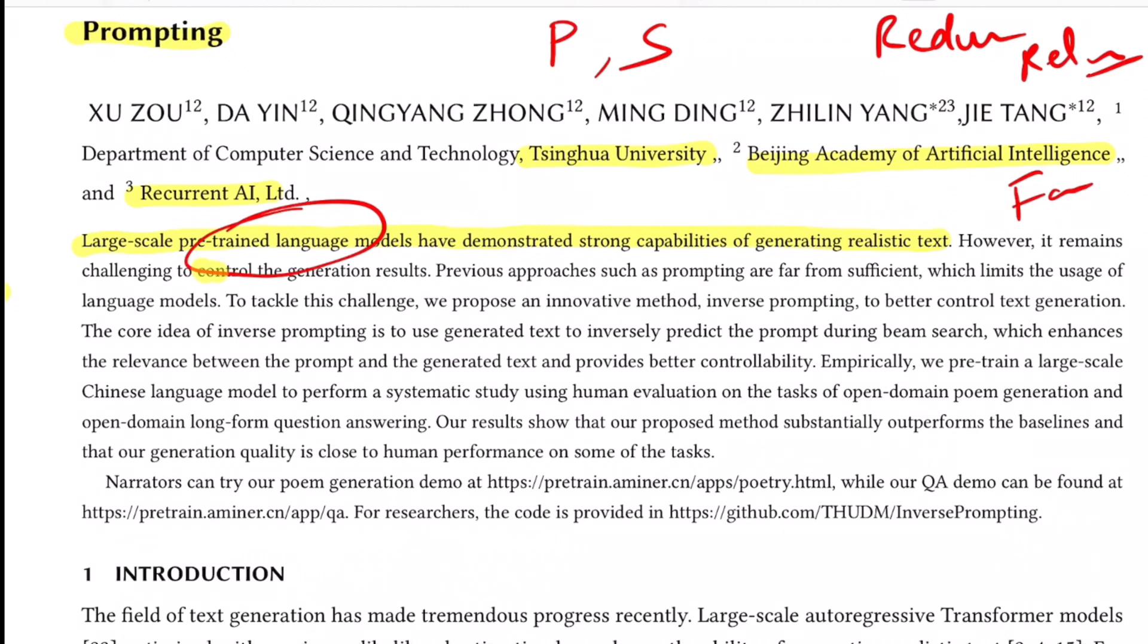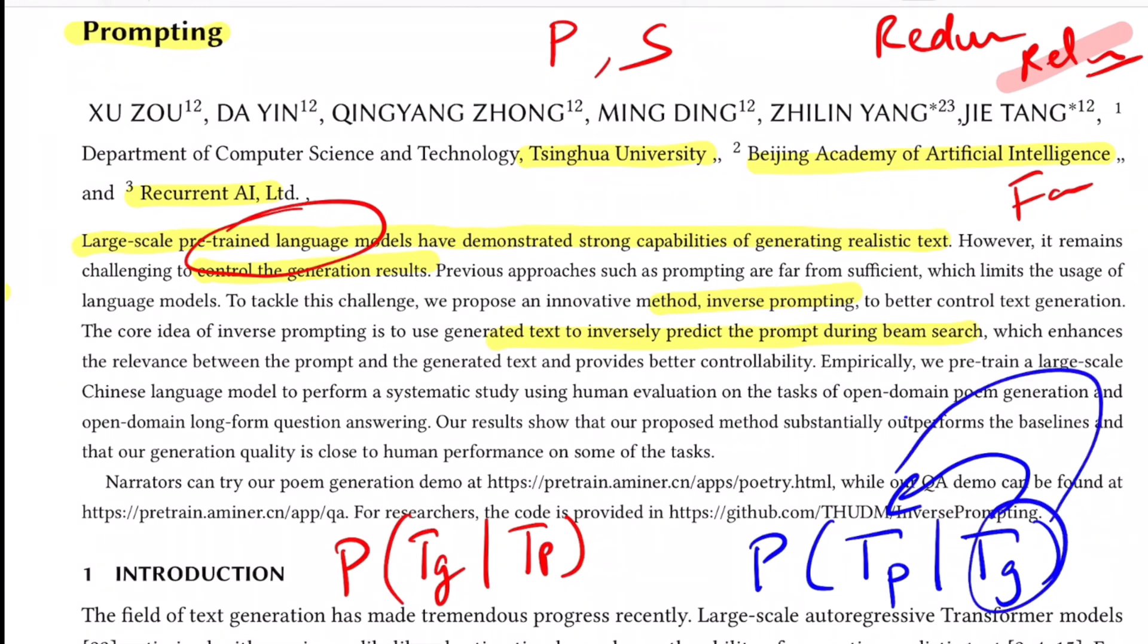For this paper, authors try to add a controllable knob to this generation process to control the relevancy of the generated text. They define a novel method called inverse prompting, where the core idea is to inversely predict the prompt during beam search. If you see the process of text generation, you're trying to model the probability of the generated text TG given the text prompt. But now what they propose is that we should do the inverse and try to predict the probability of the prompt text given the generated text. So if you do this way, then we'll get assurance of how good TG is because it's already able to generate TP.